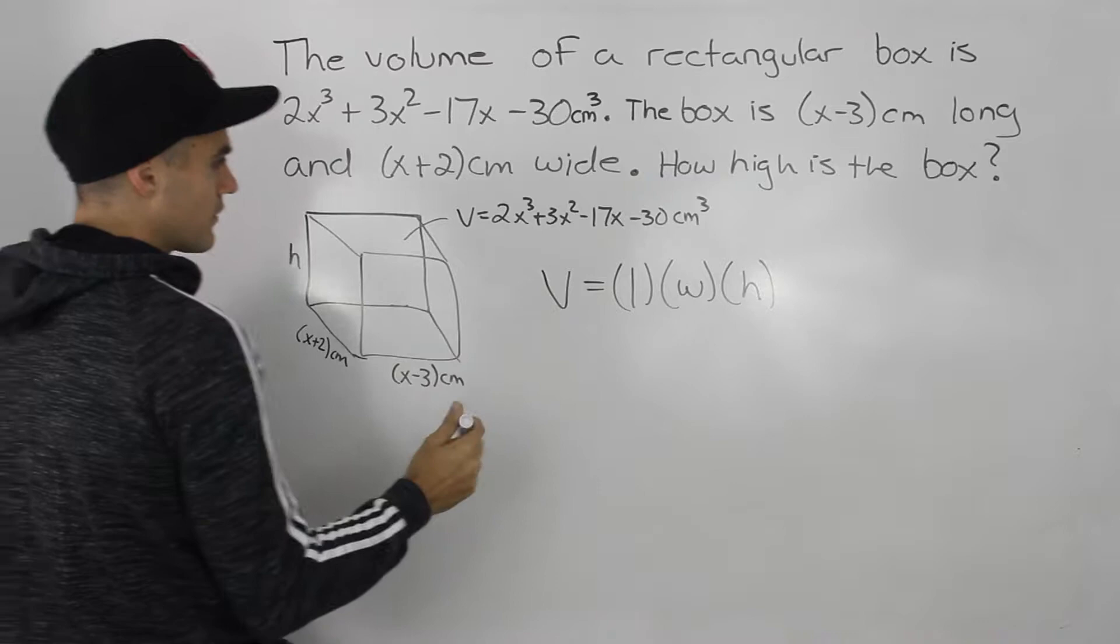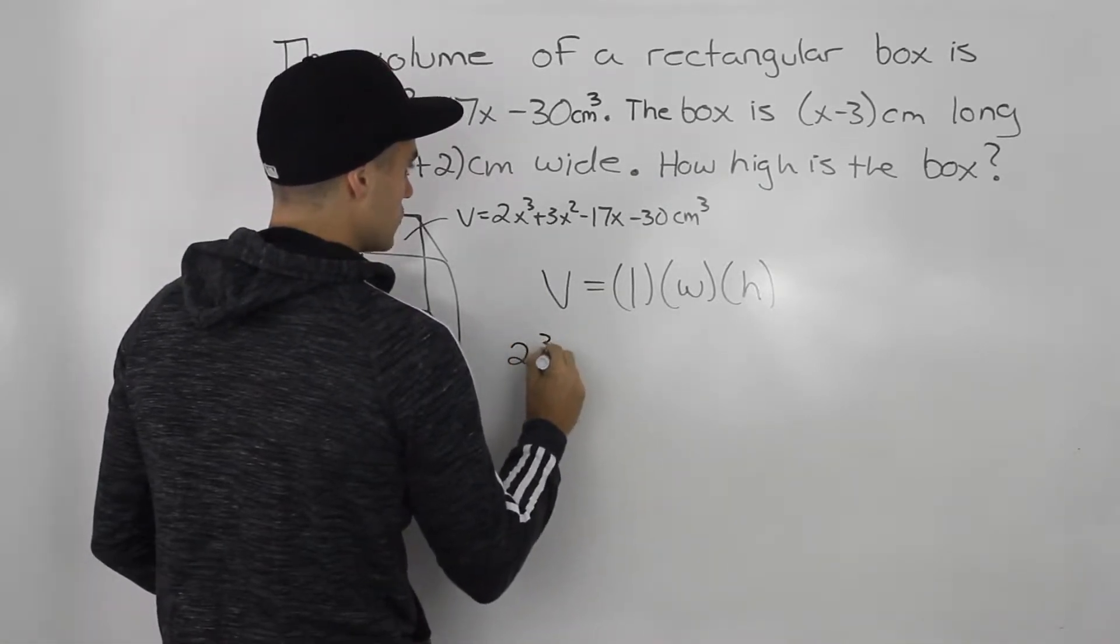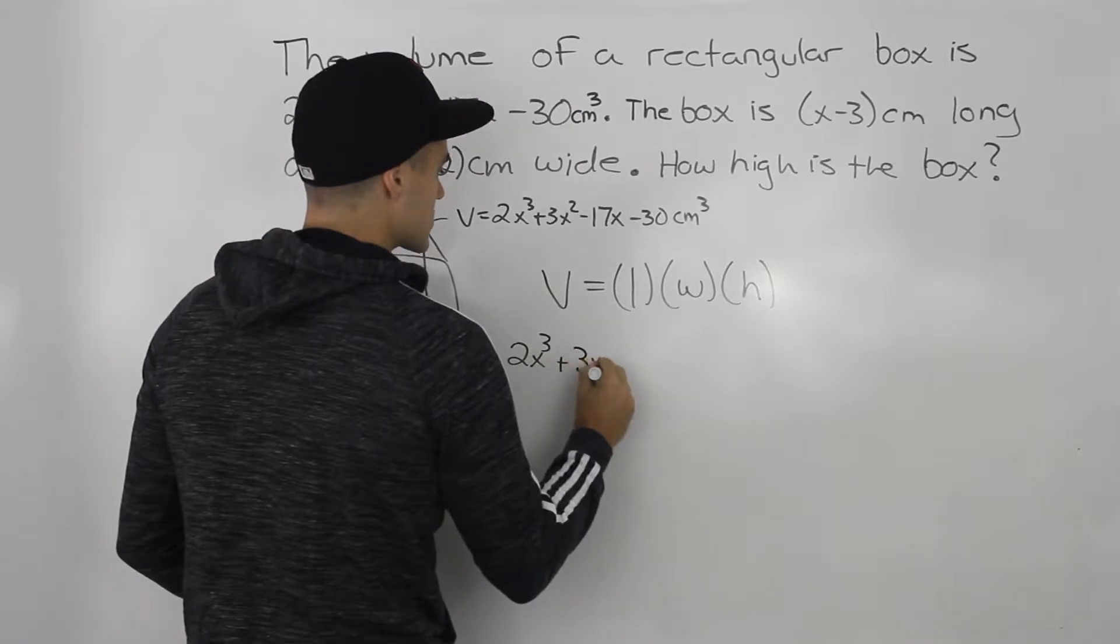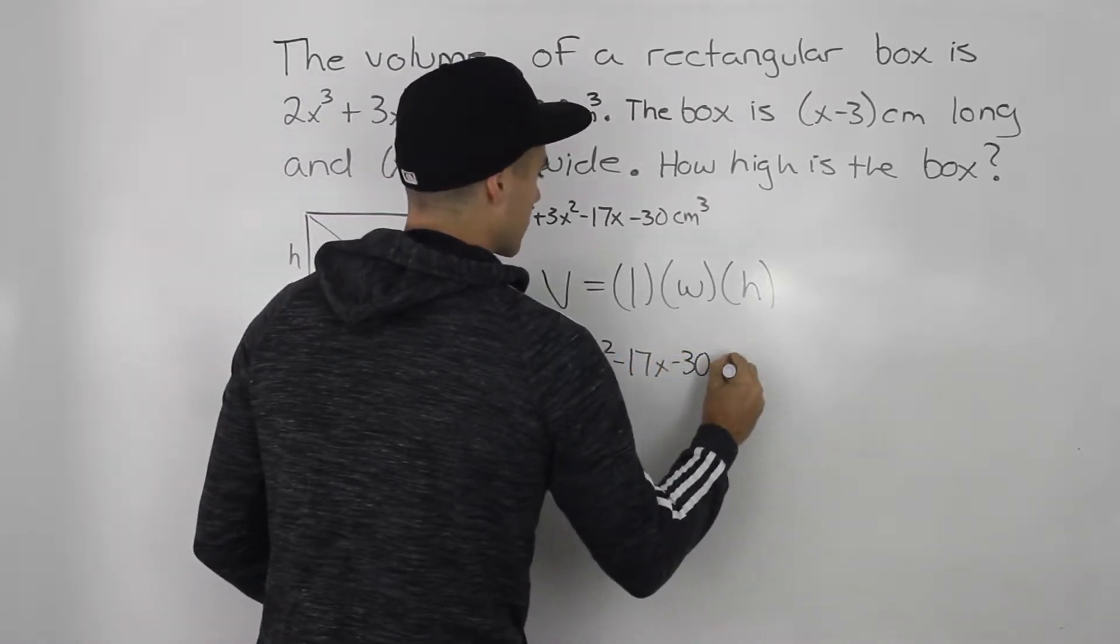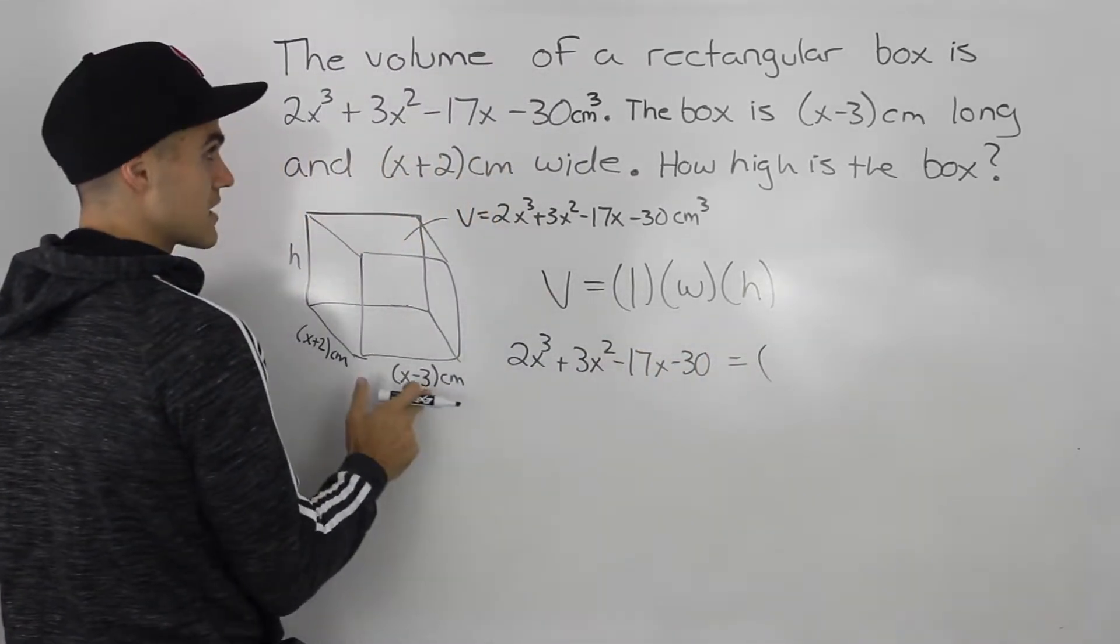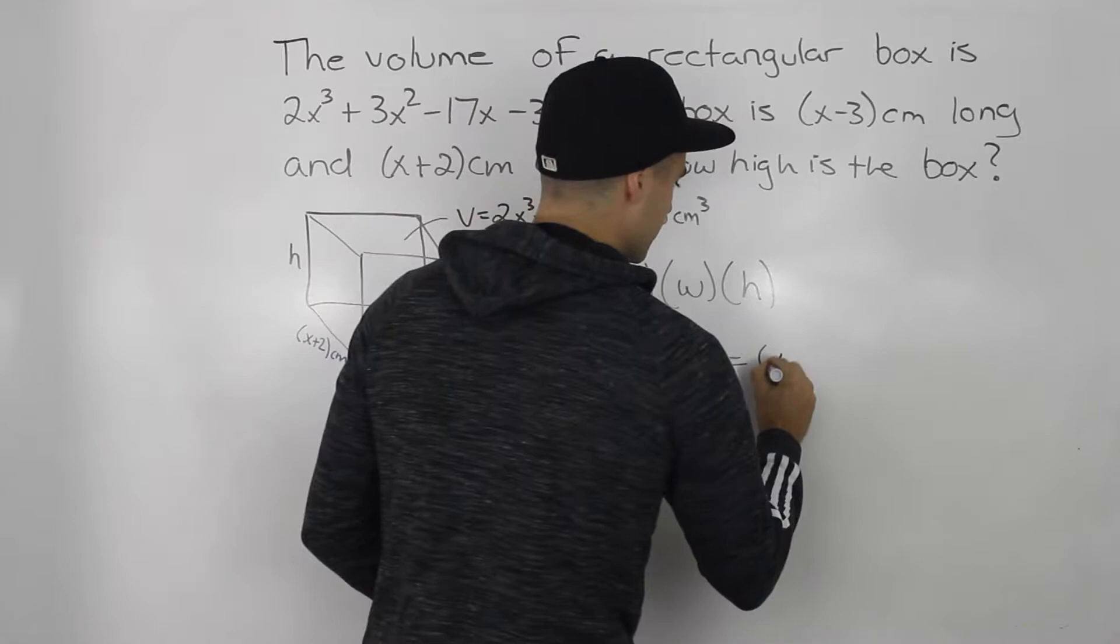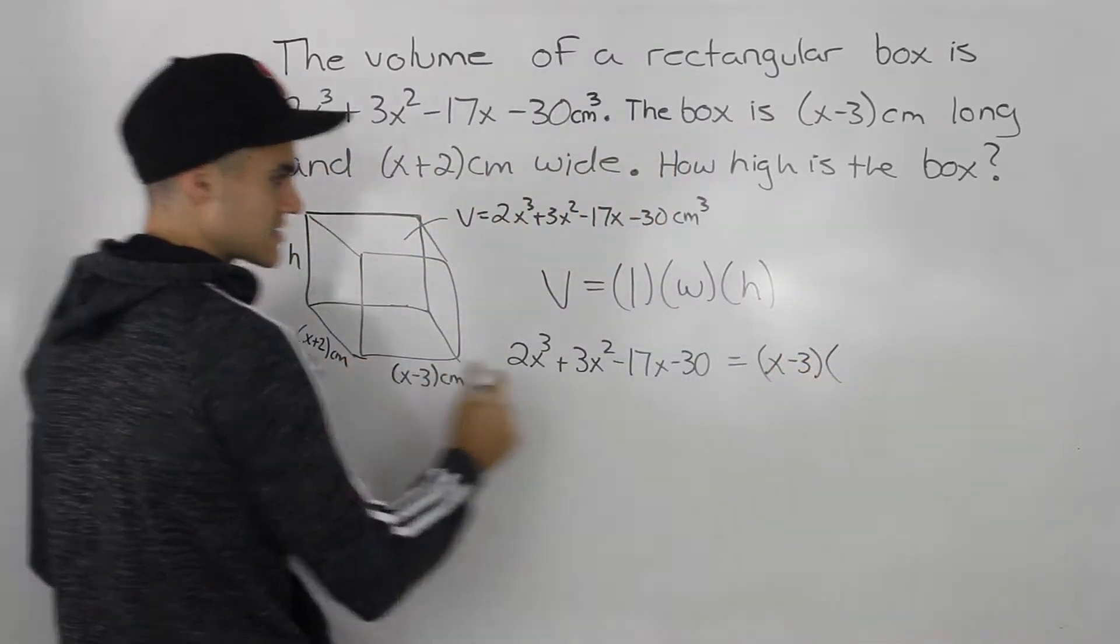So if we plug everything in, the volume is this expression 2x³ + 3x² - 17x - 30. The length is this (x-3).